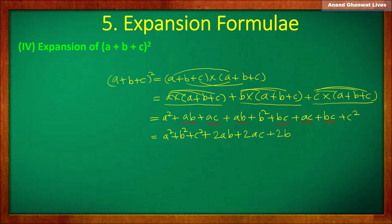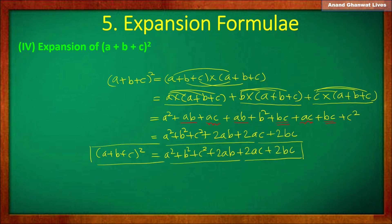So overall we have got the expansion of (a+b+c)² equals a² plus b² plus c² plus 2ab plus 2ac plus 2bc. We have to remember this formula for the expansion of the square of a plus b plus c. Now let us solve some examples based on it.